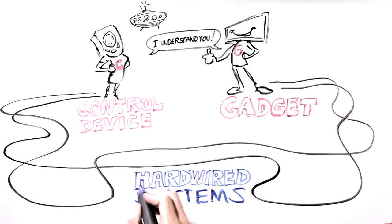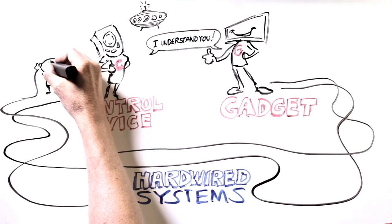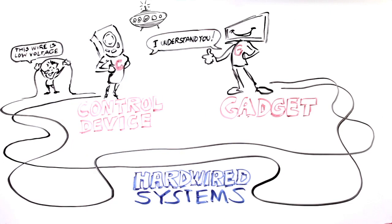Systems that use wires are called hardwired systems. They can be separated into two categories, low voltage and high voltage.